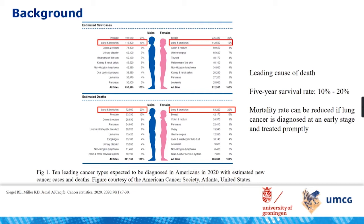Lung cancer is one of the most fatal cancers in the world, the leading cause of death among both men and women. The five-year survival rate for lung cancer patients is only between 10 and 20 percent. However, the mortality rate can be reduced if lung cancer is diagnosed at an early stage and treated in time. Screening trials have been established in many countries to improve early detection, but this results in numerous scans that need to be evaluated, which is labor-intensive.